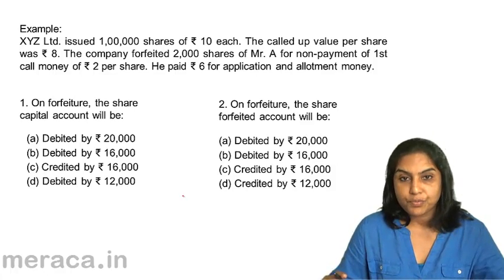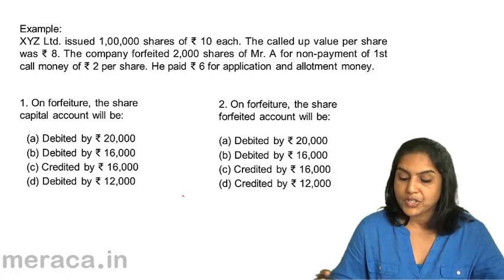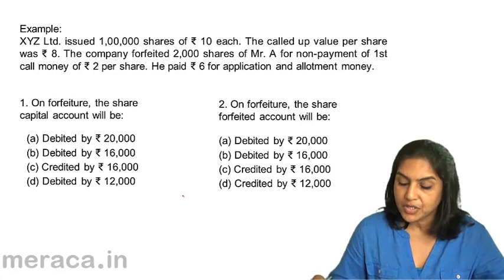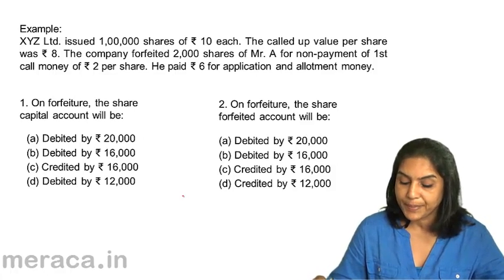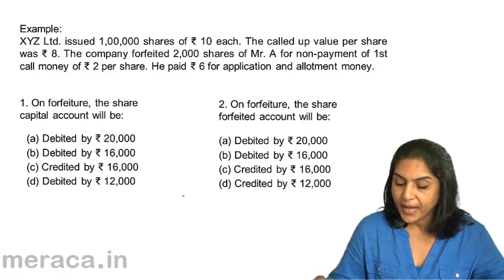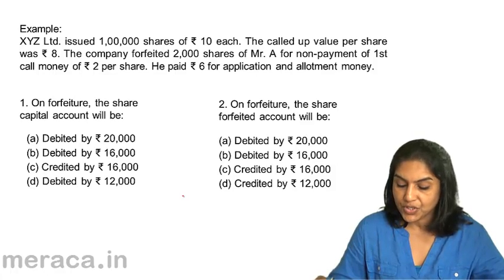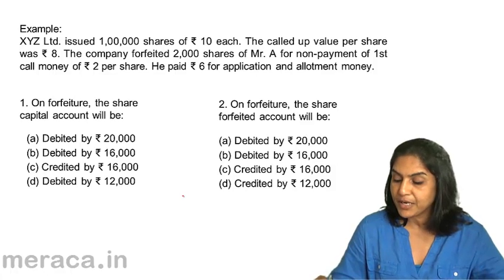There are two questions. One — on forfeiture, the share capital account will be: A, debited by Rs 20,000; B, debited by Rs 16,000; C, credited by Rs 16,000; D, debited by Rs 12,000.